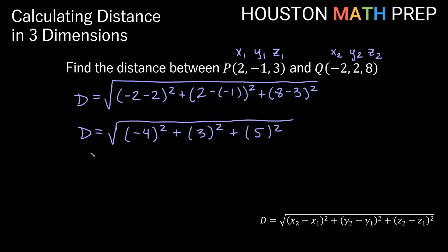And then our 8 minus 3 here is obviously 5 squared. We have all of those things squared. And then if we just square those, that'll give us the square root of 16 plus 9 plus 25. If we add all of those up, that's going to give us the square root of 50.